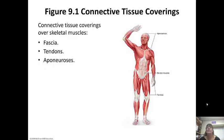The connective tissue covers some of the skeletal muscles. Fascia covers a lot of the muscles themselves. Tendons, as you can see in the picture, connect muscle to bone. And then aponeuroses cover areas like our head.